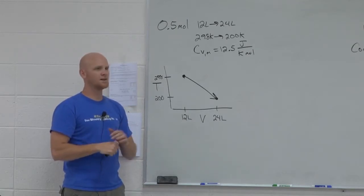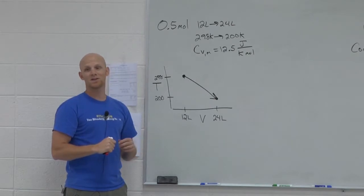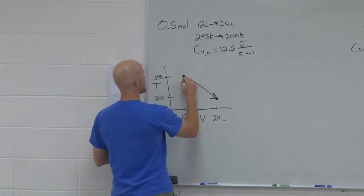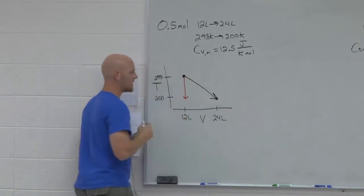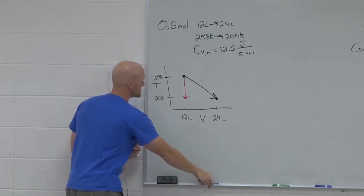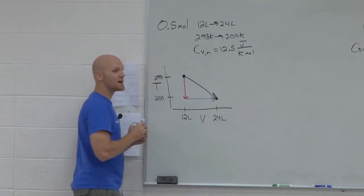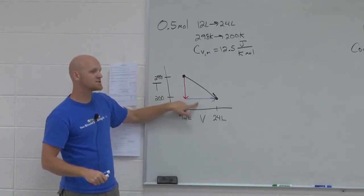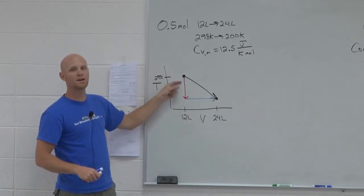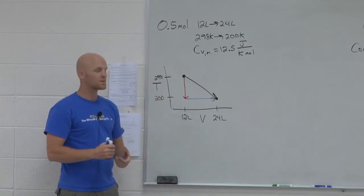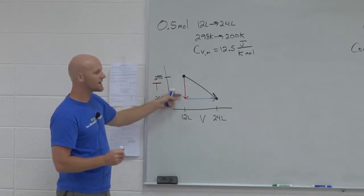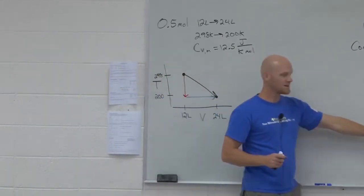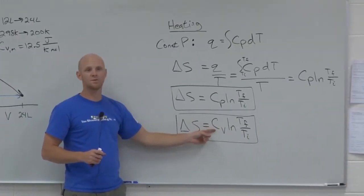Delta S, just like delta H, is a state function. Being a state function, I'm going to break it up into two steps. First, I'm going to cool this thing down at constant volume. Then, I'm going to let it expand via a reversible isothermal expansion at constant temperature. I know how to deal with each of those separately. For the first step — dealing with something cooling at constant volume — with constant volume I deal with Cv rather than Cp. So for that first step, diagrammed in red, delta S equals Cv ln of T final over T initial.